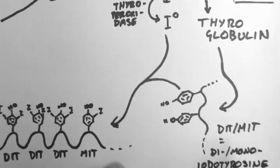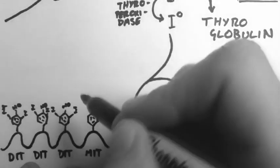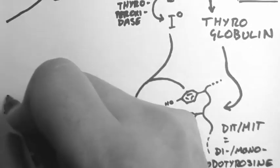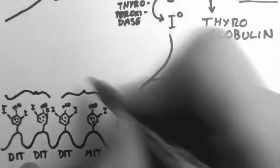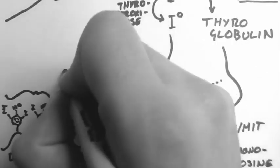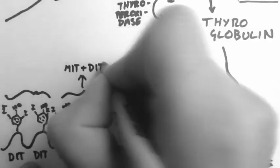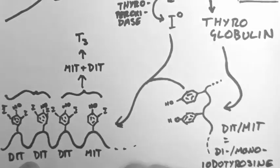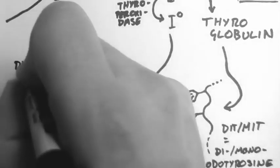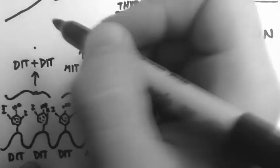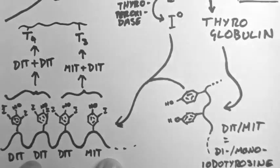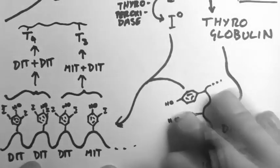Now, these tyrosine molecules can be joined together and that can lead to the formation of MIT plus DIT, which gives us a molecule with three iodines, which we call T3, or DIT plus DIT, which gives us a molecule with four iodines. And this is attached to the thyroglobulin.